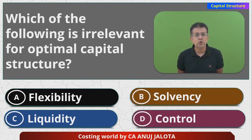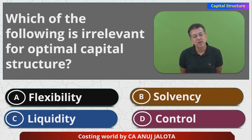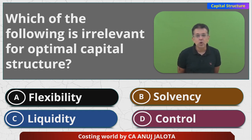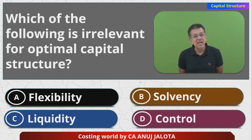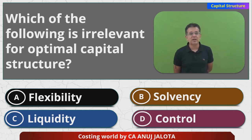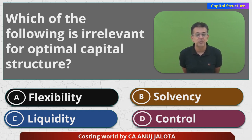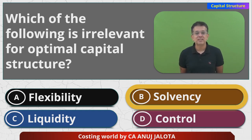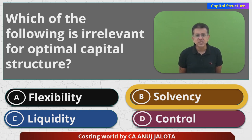So which of the following is irrelevant? Let me tell you — flexibility is relevant, liquidity is relevant, control is relevant. Solvency is not much relevant because a bankrupt company in any case is not going to be raising funds. It can become a small factor, but out of the four options, solvency is the least relevant. So the correct answer is solvency.